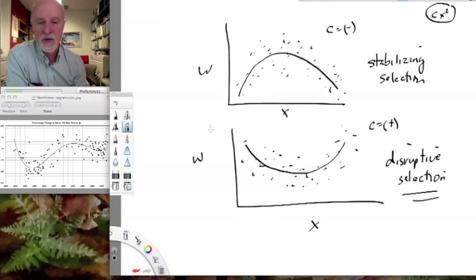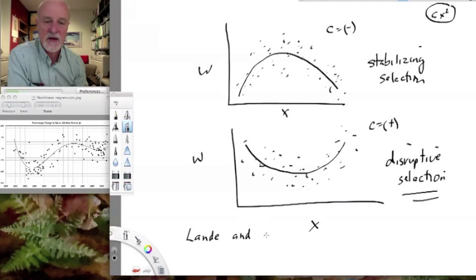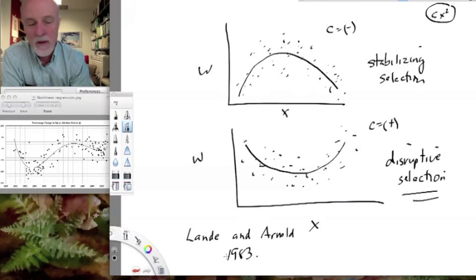By the way, this whole approach to quantifying selection was really beautifully outlined by a famous paper by Lande and Arnold in the Chicago School of Quantitative Genetics in 1983. I'll look that up. Highly cited paper.